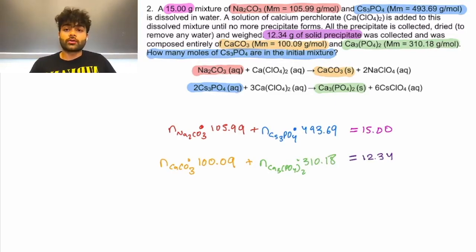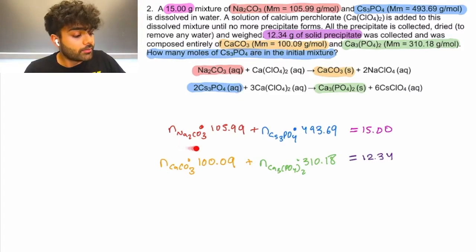Great. So, we've rewritten all of our equations, but we notice here that we have two equations and four variables: moles of Na2CO3, moles of CS3PO4, moles of CaCO3, and moles of Ca3PO42. But in order to solve a system of two equations, we can only have two variables.